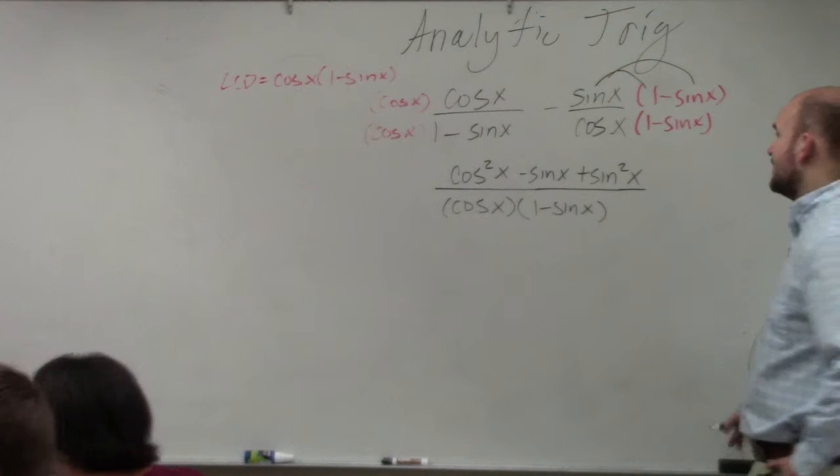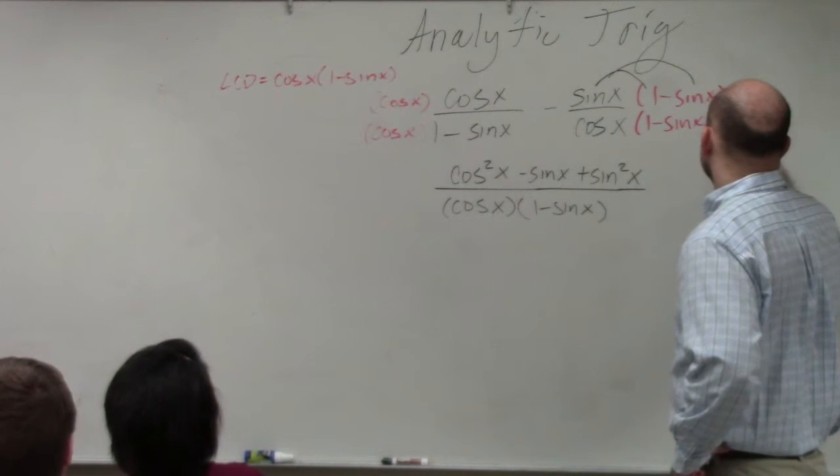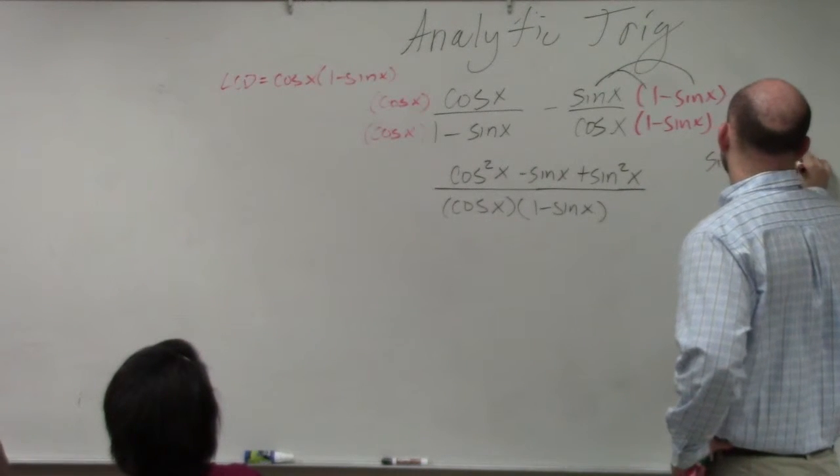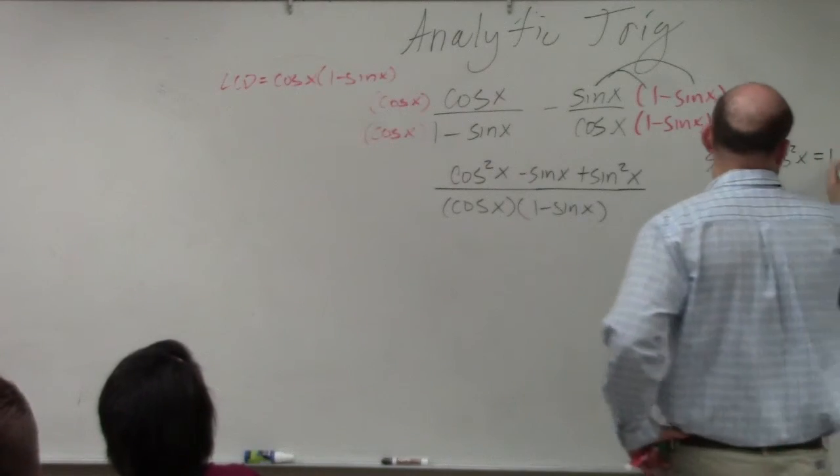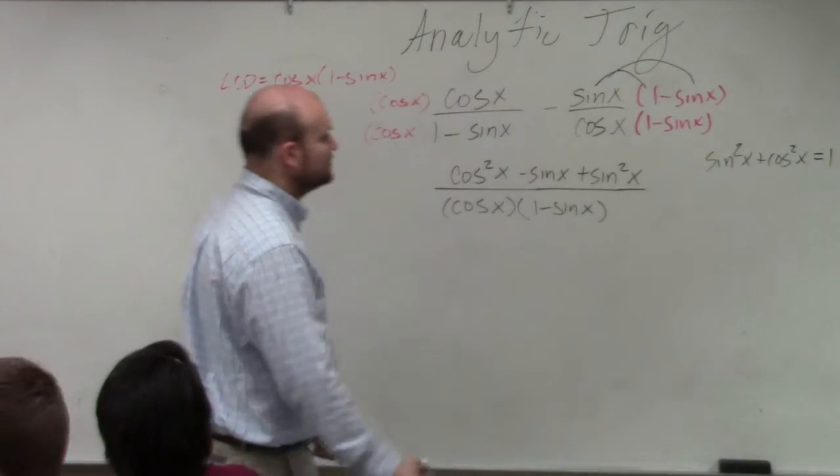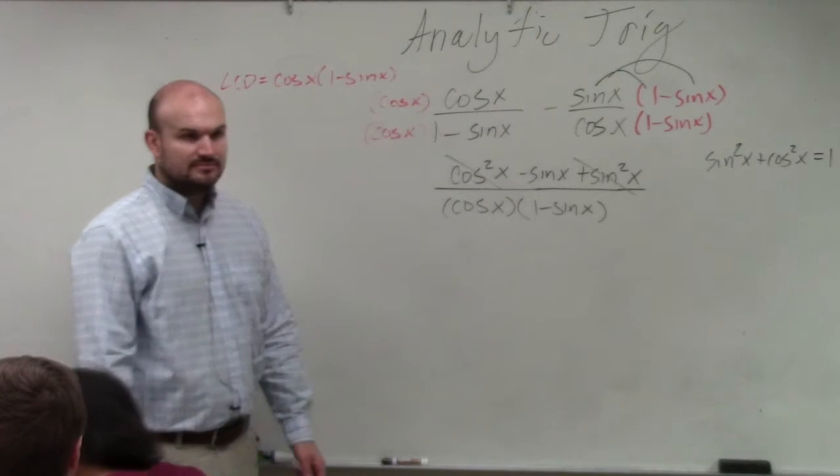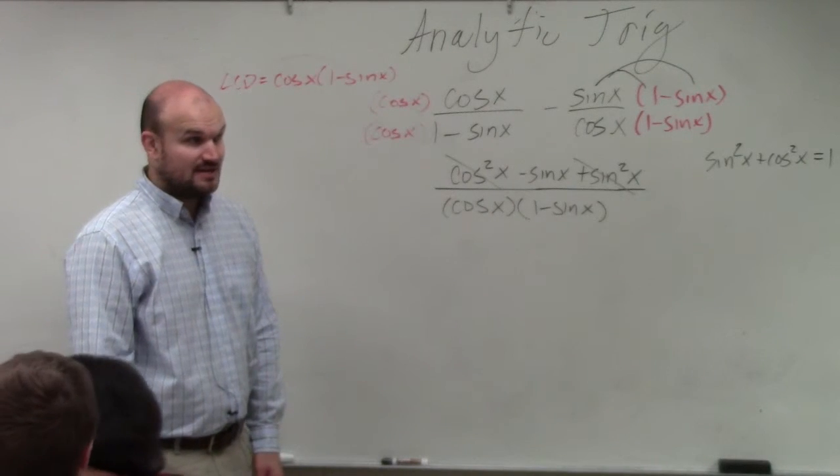Now, again, Pythagorean identity will be provided to you. What is sine squared of x plus cosine squared of x? It's equal to 1. Do you guys see that that's equal to 1?